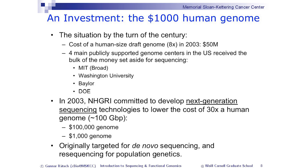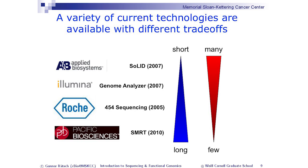In 2003, NHGRI committed to next-generation sequencing techniques. Initially the goal was a hundred-thousand-dollar genome, then a thousand-dollar genome — today we can sequence genomes for around one thousand dollars. These techniques are so efficient now that we can use them for doing all sorts of other things. There are several platforms: Solid, Illumina, PacBio, and others. They have different characteristics — some sequence long reads, some sequence more reads. The most common, probably 80% of the market, is Illumina, and most functional sequencing is done on Illumina.